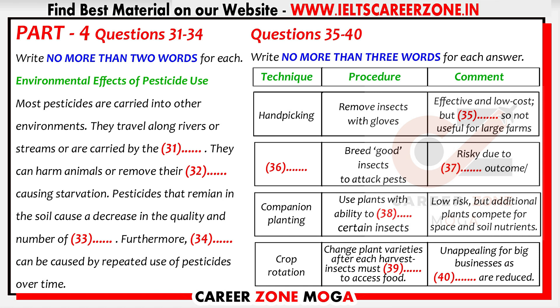Let's move on now to look at some possible alternatives to pesticide use. Although these techniques can help reduce our dependence on pesticides, they do have their own drawbacks. The first technique is hand-picking — you see a slug on a piece of lettuce, put on some gloves, walk up to the plant, and pick the slug off with your hands. Hand-picking is remarkably effective and requires little money to implement, but the time-consuming nature of hand-picking makes it unsuitable for large-scale operations.